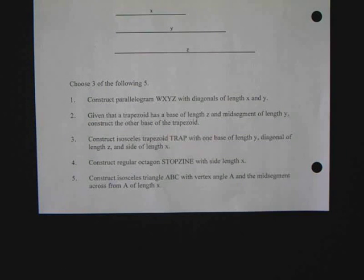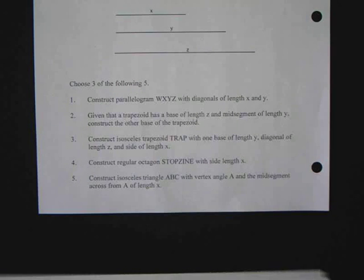So number three here. We ought to construct the isosceles trapezoid TRAP with one base of length y, diagonal of length z, and side of length x.